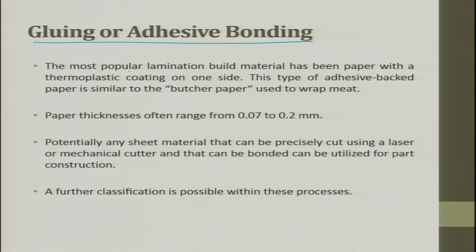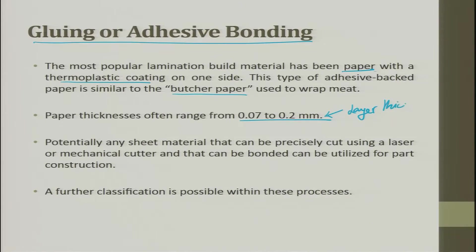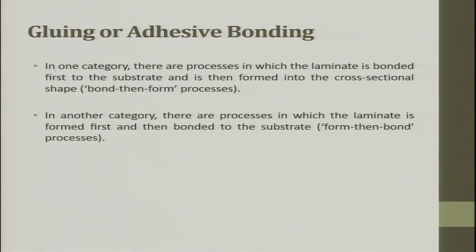For gluing or adhesive bonding, the most popular lamination build material has been paper with thermoplastic coating — similar to laminating a certificate. This type of adhesive-backed paper is similar to butcher's paper used in wrapping meat. The paper thickness is the layer thickness. This thickness will be less than FDM if needed. Potentially any sheet material that can be precisely cut using a laser or mechanical cutter and bonded can be used for part construction.